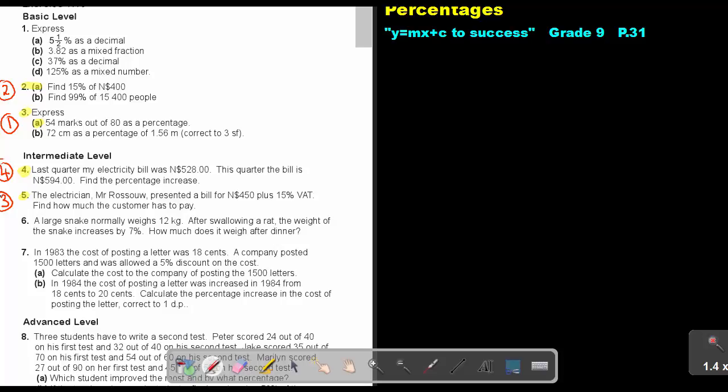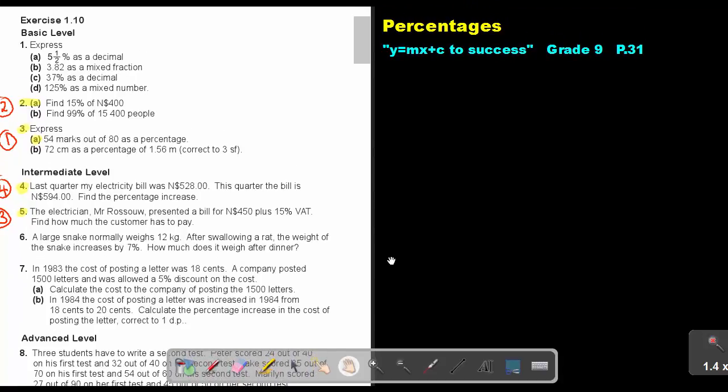Let's start doing that sums. So if I look at the first one, let me just move it a little bit down. So it's exercise 1.10 and we are going to start with number 2a. So if I say find 15% of 400, it was just 15 out of 100 and I times with 400, and I'm getting an answer of 60. And that's my final answer.